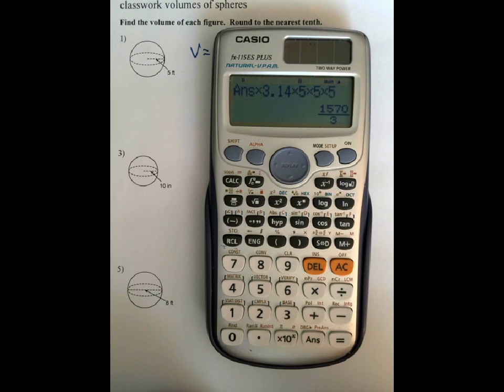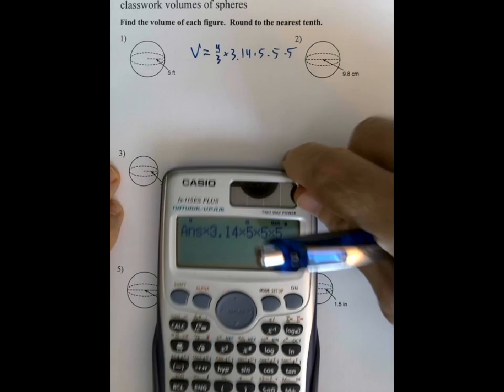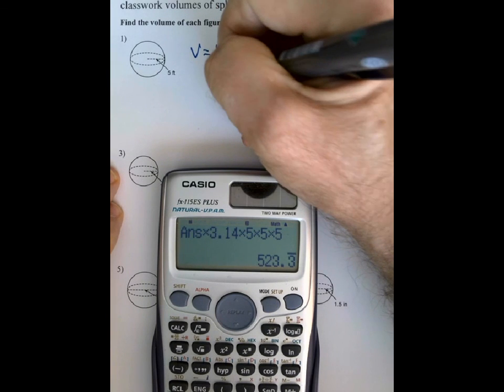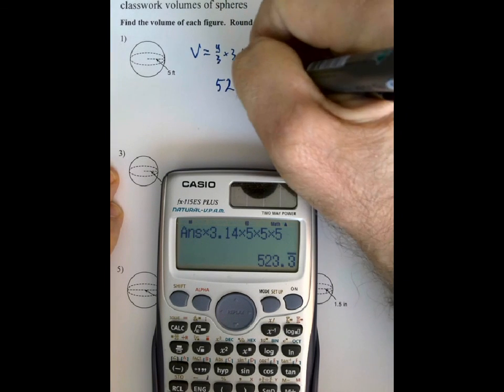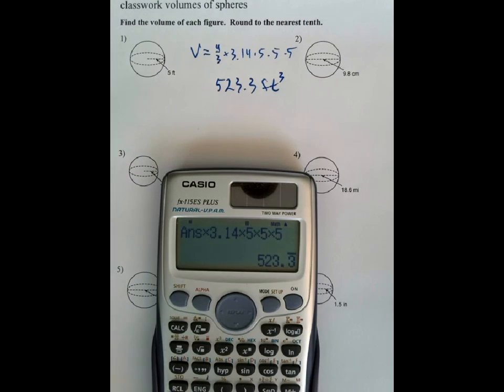Okay, and I get this number here, 523, and the 3 repeats, right? So, it's 0.3333333, so we'll just round that off to 3, and that's going to give us 523.3 cubic feet. And that's our answer, okay?